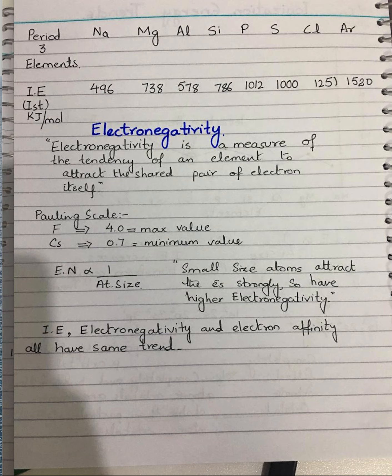On the Pauling scale, all elements of the periodic table are assigned values. It doesn't have any units. Fluorine has got the maximum electronegativity value, which is 4.0. Cesium has got the minimum electronegativity value in the periodic table, which is 0.7. Fluorine has got an arbitrary value assigned, and the remaining elements of the periodic table are assigned values relative to fluorine.